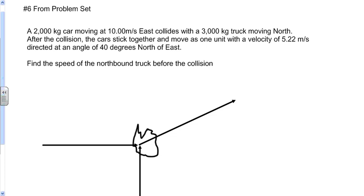The problem reads: a 2,000 kg car moving at 10 m/s east collides with a 3,000 kg truck moving north. After the collision, the cars stick together and move as one unit with a velocity of 5.22 m/s directed at an angle of 40 degrees north of east. We need to find the speed of the northbound truck before the collision.